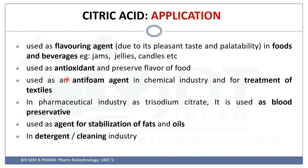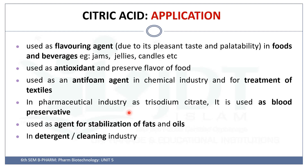The uses and applications of citric acid: it is mainly used as a flavoring agent with a pleasant and palatable taste in the food and beverage industry, including jams and jellies. It is also used as an antioxidant and to preserve the flavor of food. In the pharmaceutical industry, dry sodium citrate is used as a blood preservative and as an agent for the stabilization of fats and oils. Citric acid is also used in detergents and the cleaning industry. That is all about the production of citric acid by fermentation process. Thank you for watching.